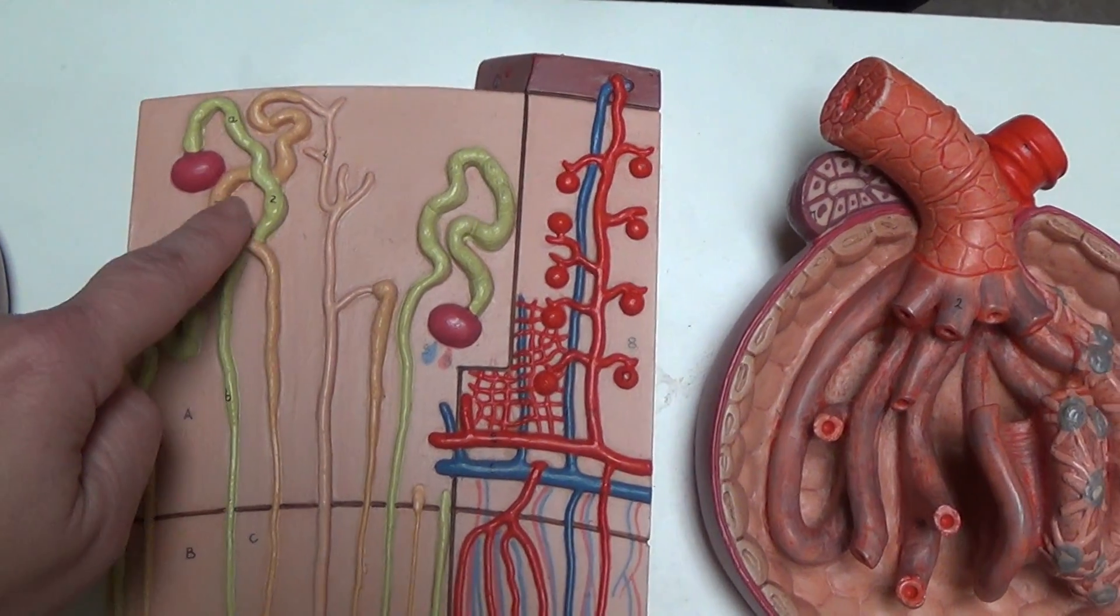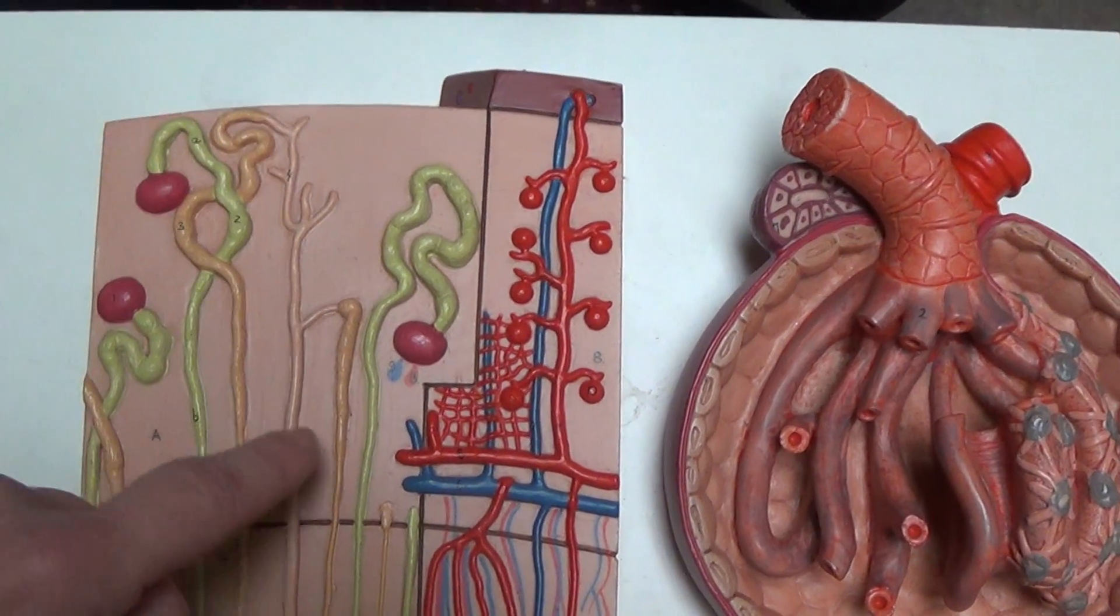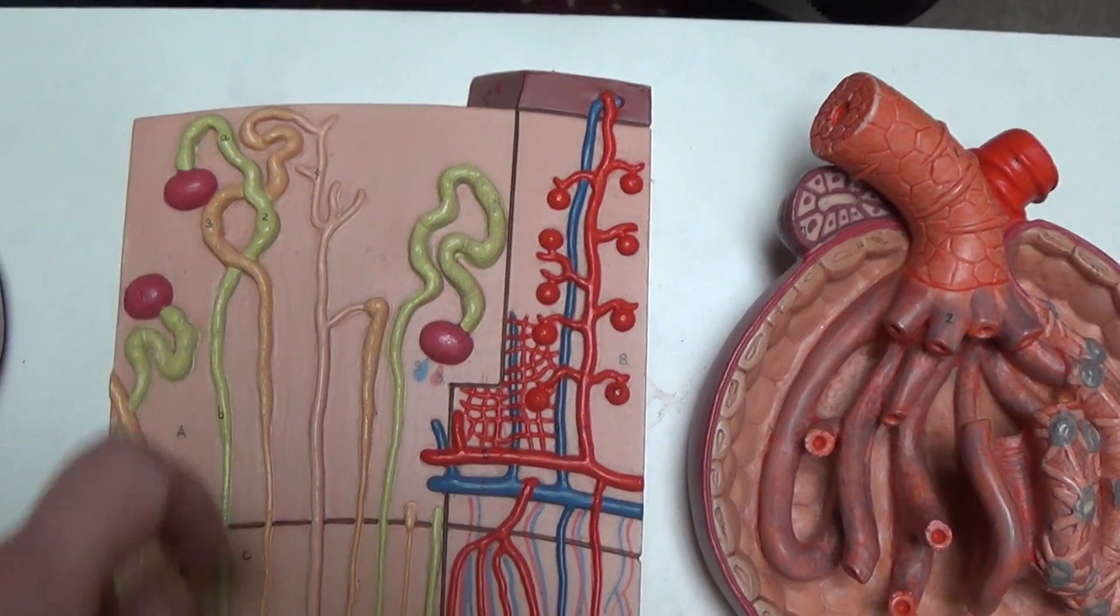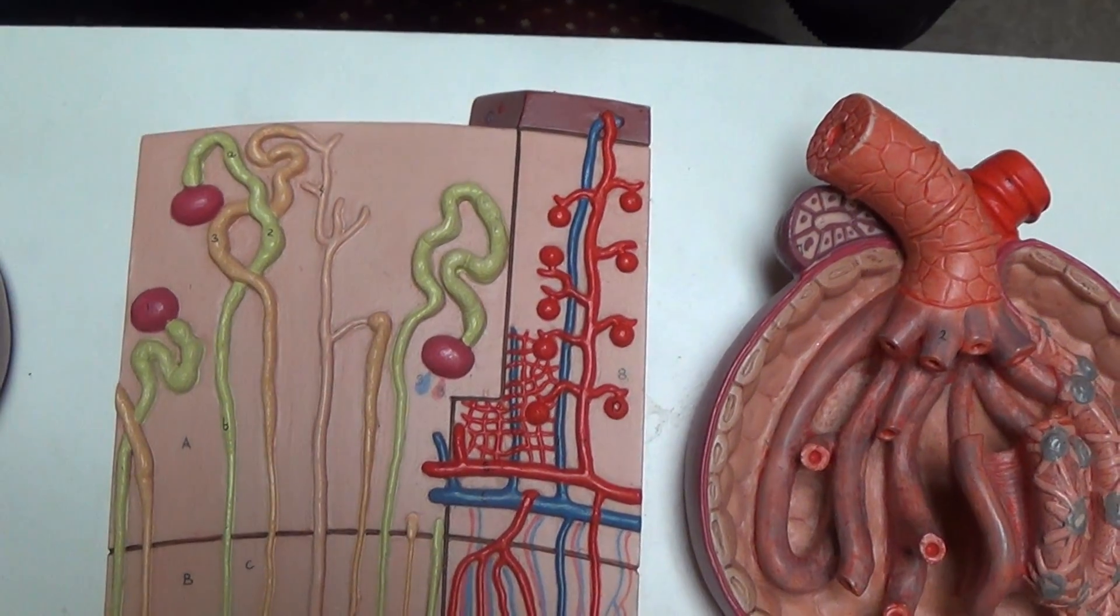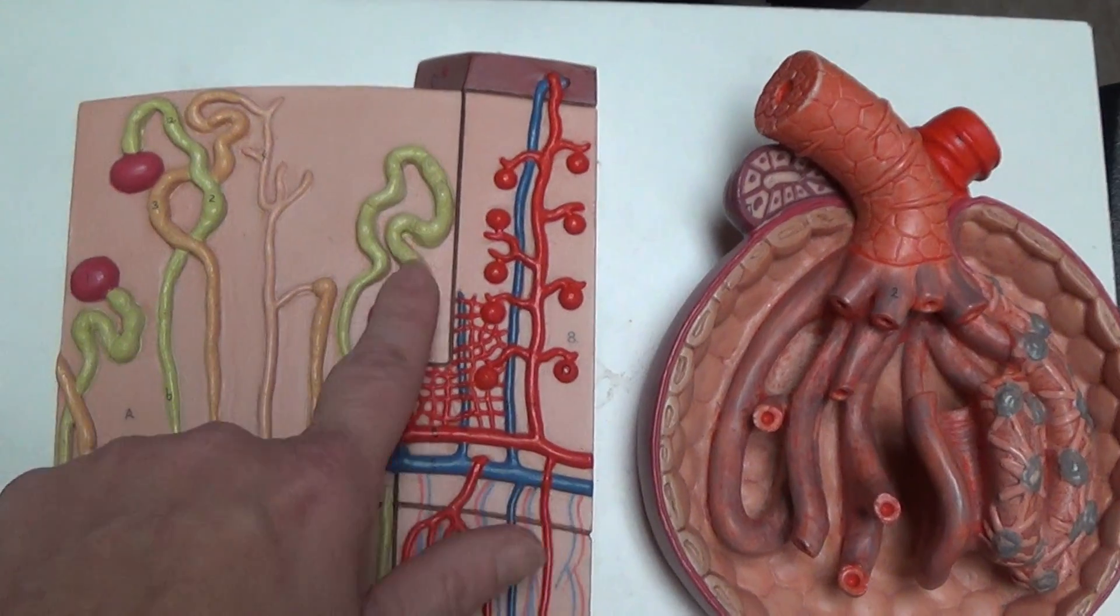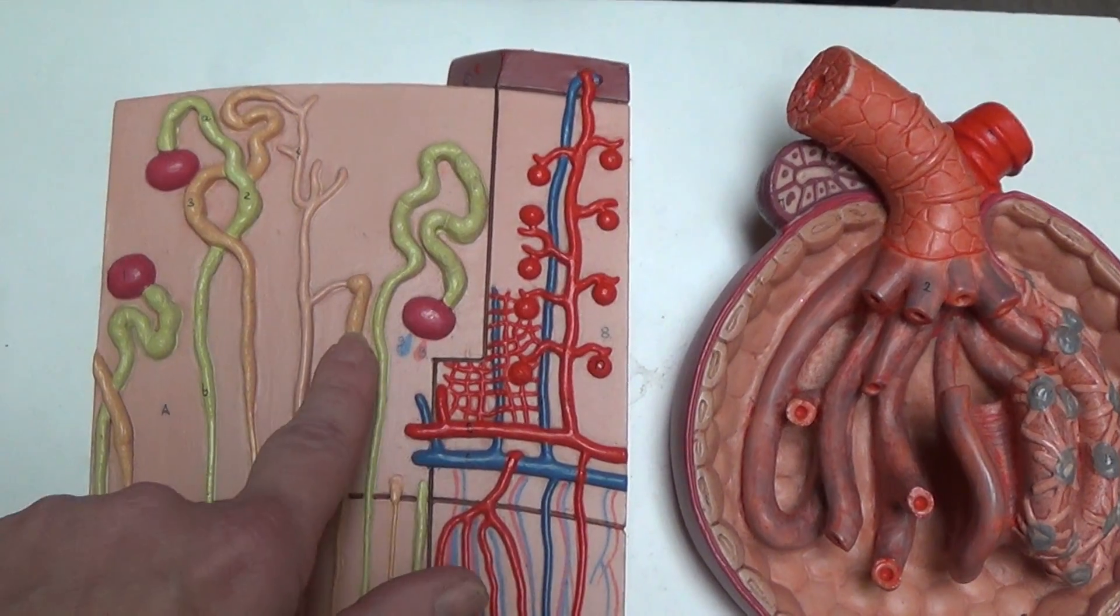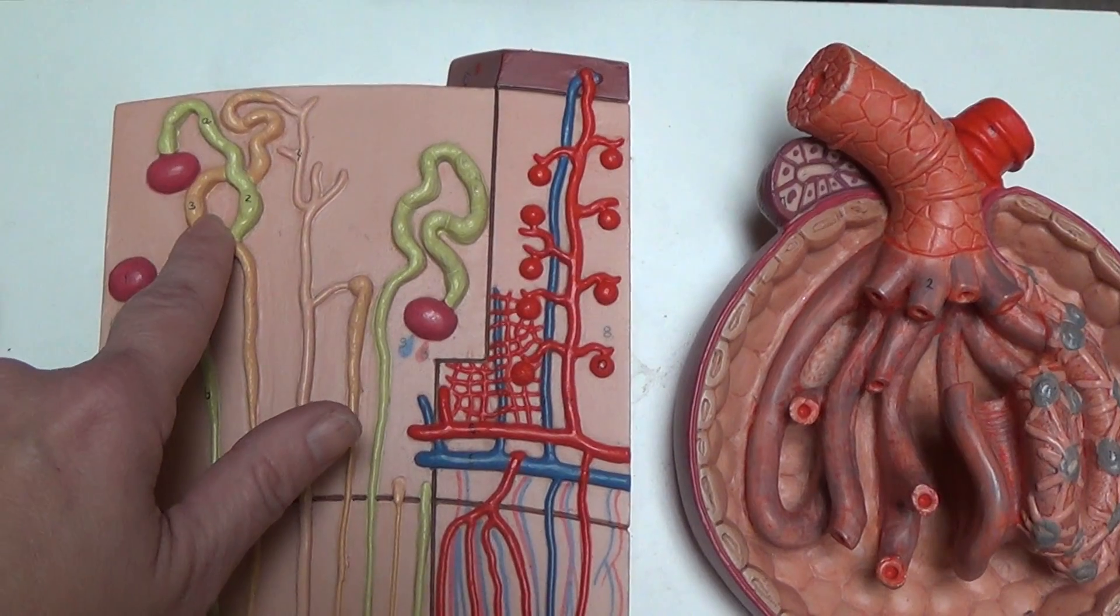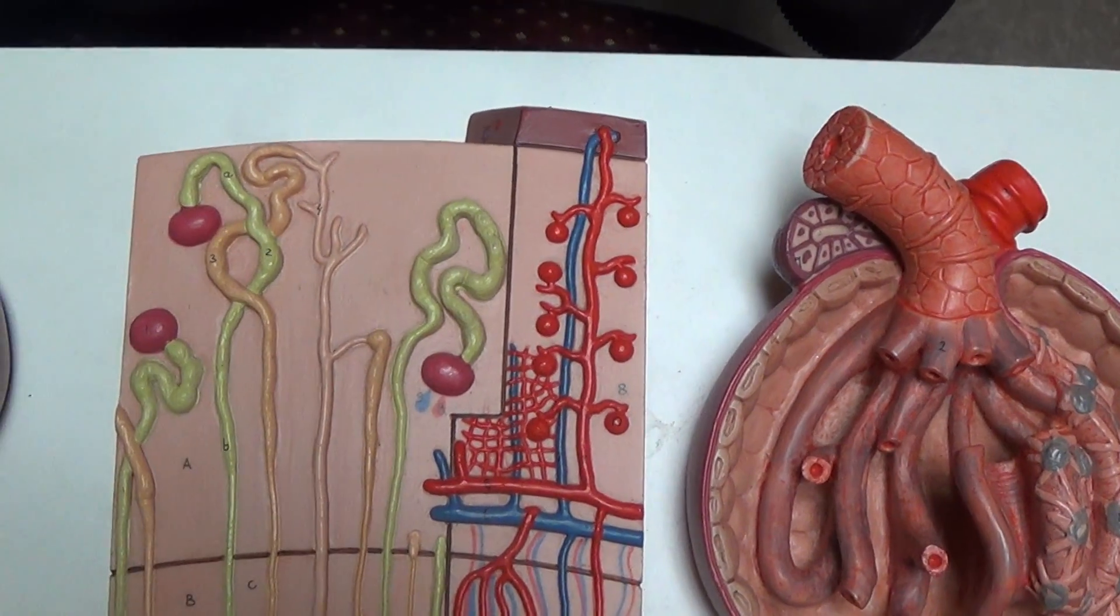And then it comes back up to another area that's a different color here. And this one we can see is highly convoluted. This is called the distal convoluted tubule. Proximal is first and closer to the glomerulus. Distal is far away from that glomerulus from a length of flow.